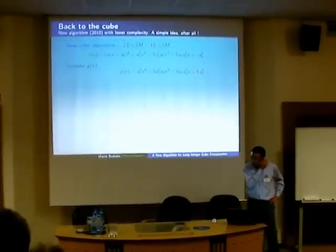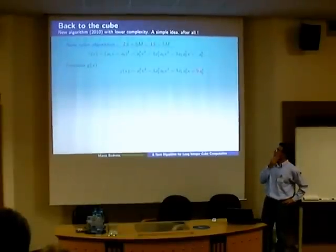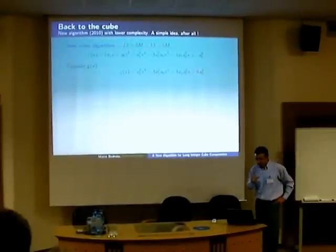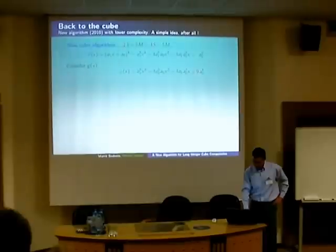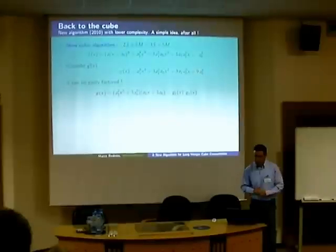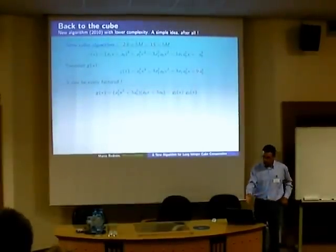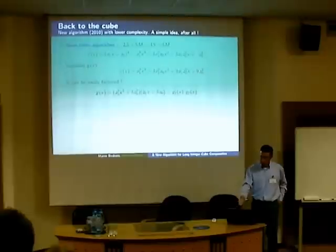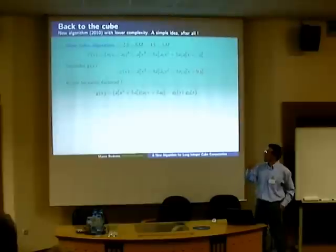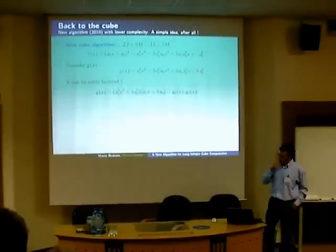But the first idea is to consider a slightly different polynomial, G of X, which just has nine more in the constant term. This appears almost by a miracle. It was a chance. But what does it happen? If you try to factorize G, well, you can do it very well. You obtain G1, a quadratic polynomial, and G2, a linear polynomial. And if you look at this formula now, you can guess already the algorithm that is behind.